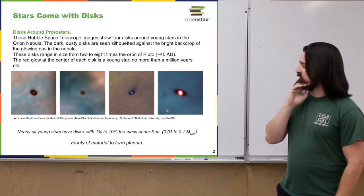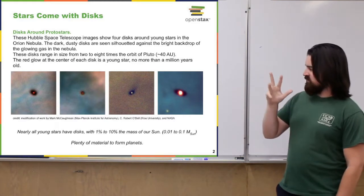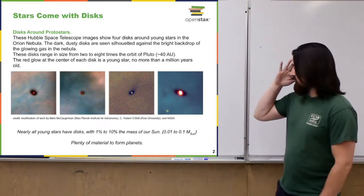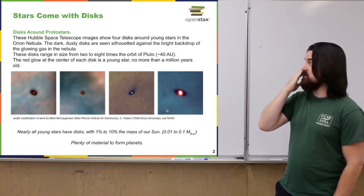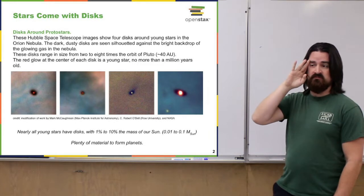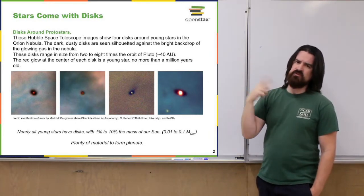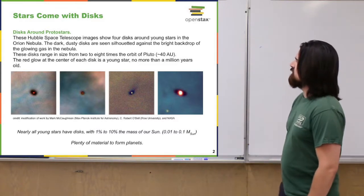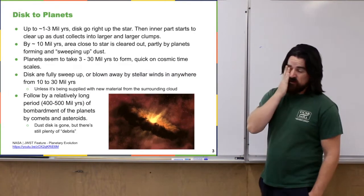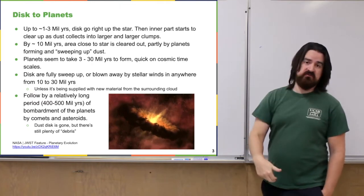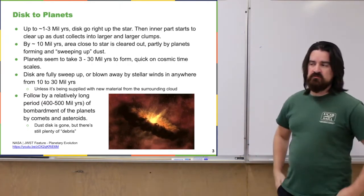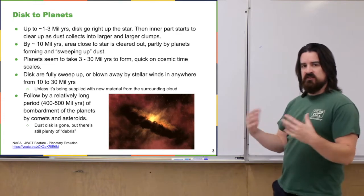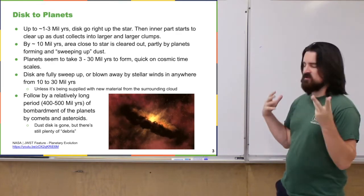Beyond being large, these discs have a decent amount of mass — typically between 1 and 10 percent the mass of our Sun. That's plenty of material to form planets. If you recall, all of the planets in our solar system are less than 1 percent the mass of the Sun; the Sun makes up over 99 percent of the mass in our solar system. So having 1 to 10 percent of that is plenty to make a number of planets.